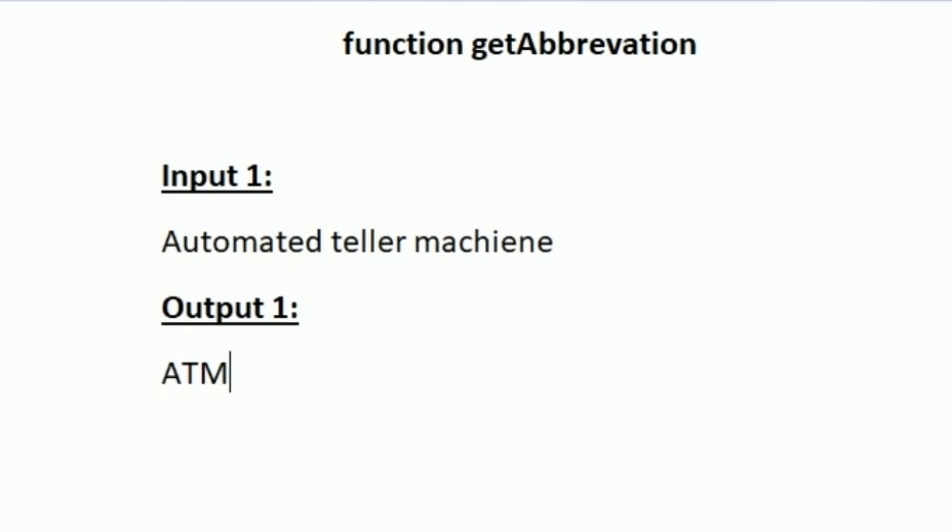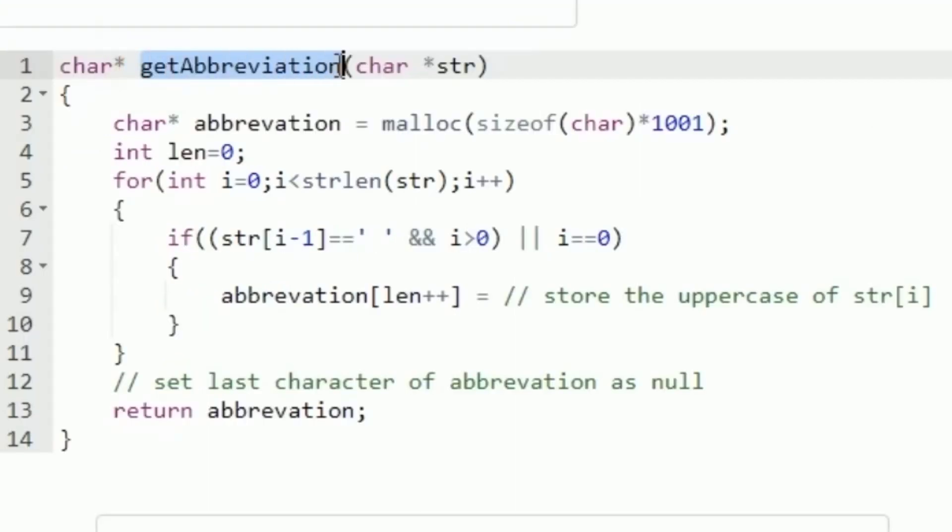Now let's see how we will define this function named getAbbreviation. This function accepts a character pointer named str in the arguments and is expected to return a character pointer.